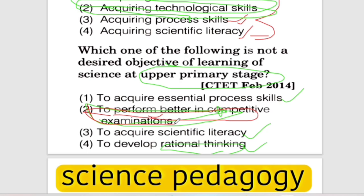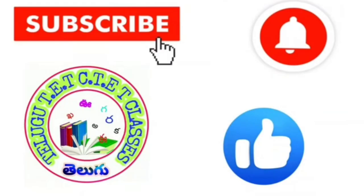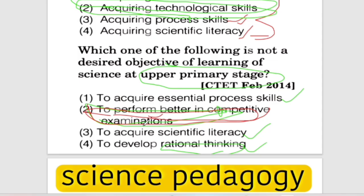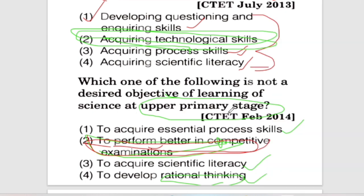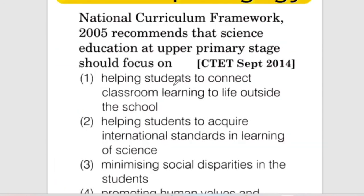If you like the video, subscribe to the channel. We will cover Telangana and AP TET, DSC preparation tips. The objectives are: developing questioning and inquiry skills, process skills, scientific literature, and rational thinking. This is the objective tool. Next.